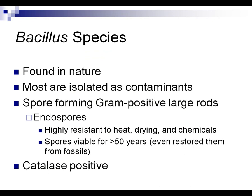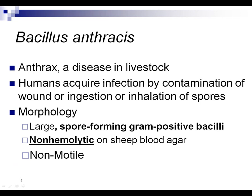Bacillus is the next genus — these are the only spore-forming gram positive rods we'll discuss. Refresh yourself on spores: why are they important, and what characteristics do they give the organisms that produce them? Bacillus is catalase positive. The main pathogen is Bacillus anthracis, which causes anthrax — typically in livestock, but humans can acquire infection through ingestion of spores or wound infection. The morphology shows large spore-forming gram positive bacilli. It is non-hemolytic on sheep blood agar and non-motile.